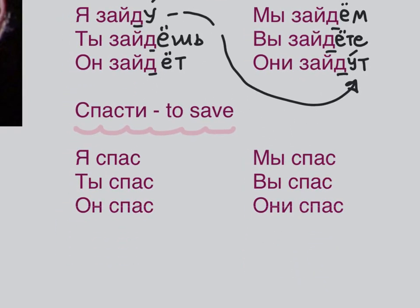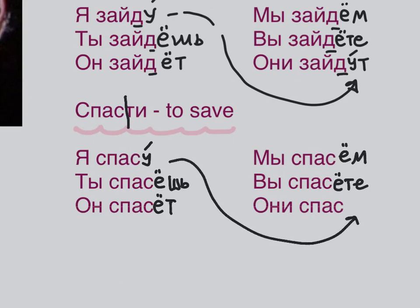СПАСТИ — to save. Я СПАСУ — I will save. Я СПАСУ ТЕБЯ. ТЫ СПАСЁШЬ — lots of ЁШЬ today. ОН СПАСЁТ. МЫ СПАСЁМ. ВЫ СПАСЁТЕ. ОНИ СПАСУТ — stress on УТ. Я СПАСУ ТЕБЯ. ОН СПАСЁТ МЕНЯ. Nobody needs to save me, I'm exaggerating.